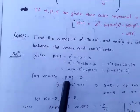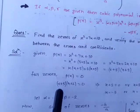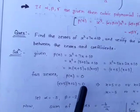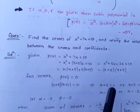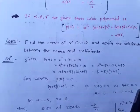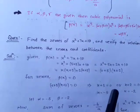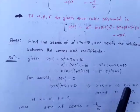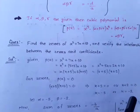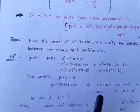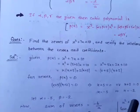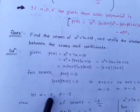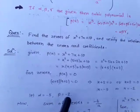For zeros, we set p(x) = 0: (x + 5)(x + 2) = 0. Therefore x + 5 = 0 or x + 2 = 0, giving x = –5 or x = –2. There are two zeros: –5 and –2. Let alpha = –5 (first zero) and beta = –2 (second zero).